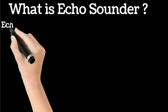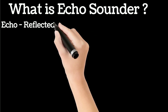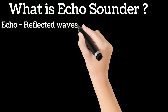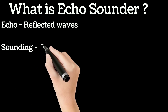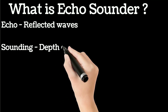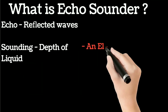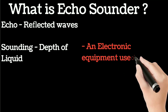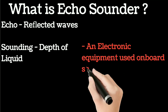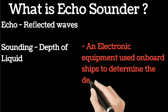Hello and welcome. In this video I will discuss what is an echo sounder and its principle. Echo means reflected waves and sounding means depth of the liquid. An echo sounder is an electronic equipment used on ships to determine the depth of water beneath the keel.